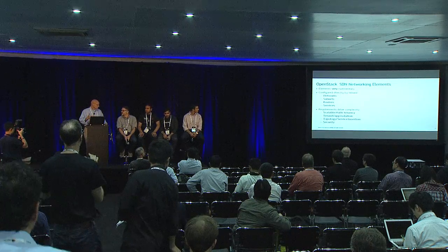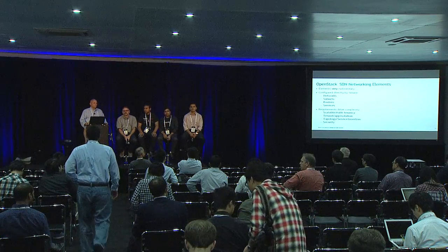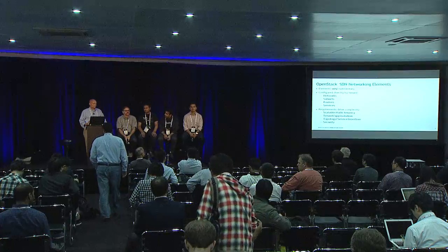OpenStack networking is based upon some very familiar, simple, rudimentary primitives. Each tenant network environment is based upon simple primitives: networks, subnets, routers, and services. From a tenant perspective, this is all very simple. So where does the complexity get introduced? The complexity of OpenStack networking is really driven by the requirements to deliver isolated multi-tenant environments in a scalable way. Introducing requirements for isolated tenants on a massively scalable fashion — that's where some of the complexity comes in.